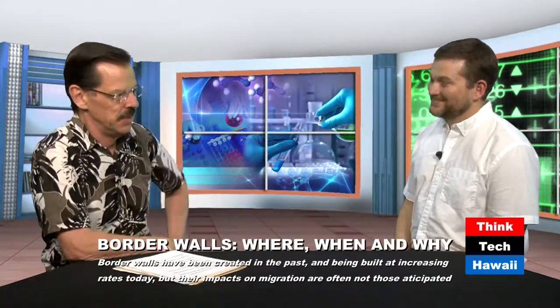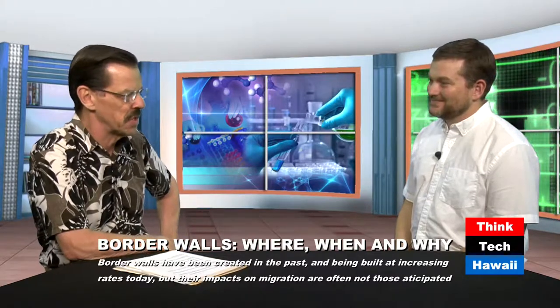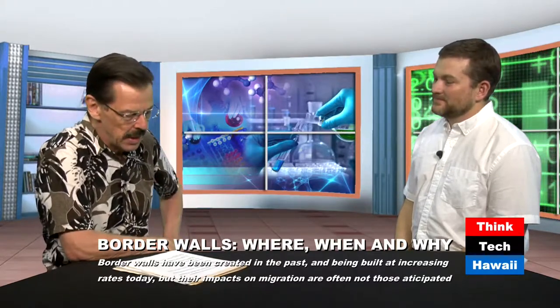And you're back here on Likeable Science with me, Ethan Allen here on ThinkTech Hawaii. With me in the ThinkTech studios is Rhys Jones, Professor of Geography and the Environment from the University of Hawaii at Manoa, the College of Social Sciences. This is a whole new segment on likeable social science. So we've been talking about border walls, when, where, and why. And so we were talking a little bit about the U.S.-Mexico border, using that as a sort of current case example. It's been in the news a lot. So about how much that border is currently fenced effectively.